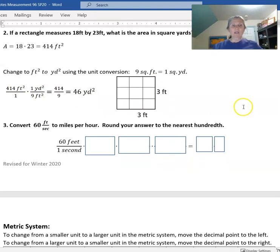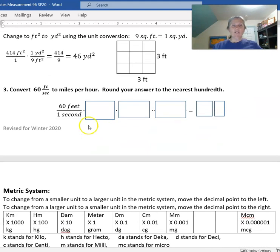The second one says convert 60 feet per second to miles per hour and round to the nearest hundredth. I want to think about 60 feet to 1 second. First thing I'm going to do is change that to miles. I know how many feet there are in a mile, so I can use that unit conversion: 1 mile is 5,280 feet. Notice feet on the top goes to feet on the bottom so they cancel each other out, and we're left with miles on the top.